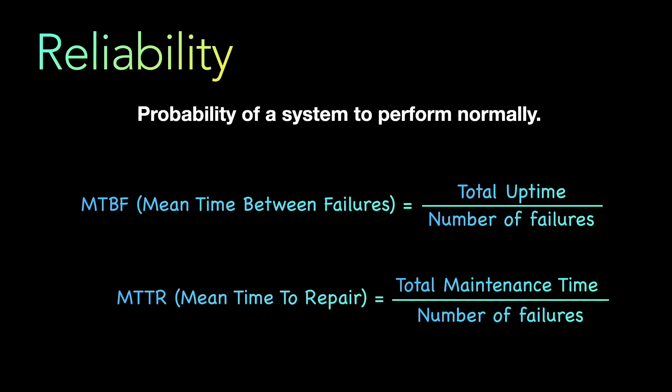Mean Time To Repair is the total maintenance time across all failures divided by the number of failures. MTBF and MTTR are the two formulas that correspond to reliability. Reliability and availability go hand in hand — mathematically, availability can be treated as a function of reliability. In other words, reliability can be considered a subset of availability.